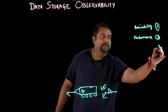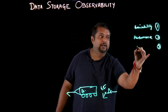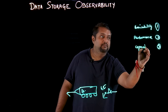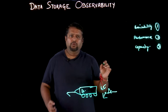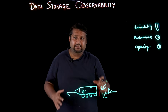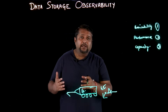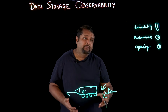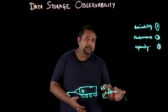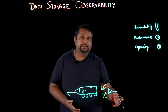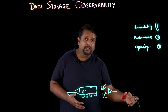The third pillar, and a very critical one, is capacity. Do I have enough capacity? What capacity was I using in the past? When is my box going to run out of capacity, and how can I order more capacity when it is going to run out?